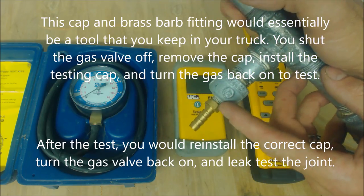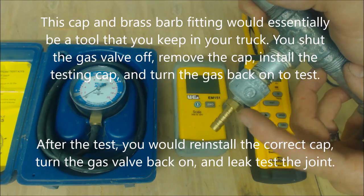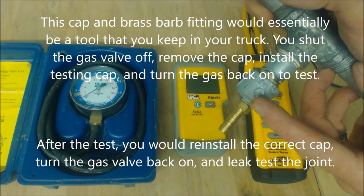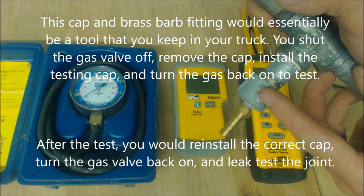We could also check it at the drip tee right here. We could have a cap with a brass barb fitting already tapped into it and check the gas pressure there while the furnace is running.